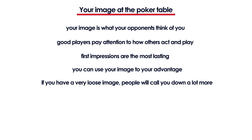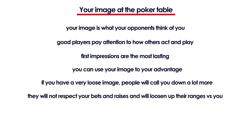A couple of hands forward, you're dealt pocket queens. Now you can fully take advantage of your loose image. When a tight player with whom you've already played a couple of pots raises from middle position, you hope that he'll finally make a stand with a weaker than usual hand and you'll be able to stack him. So you 3-bet, he 4-bets, you shove all in and he calls with ace-jack offsuit. He would have never done this if it wasn't for your image. If you had a tight image, he would have likely folded ace-jack off to the 3-bet.